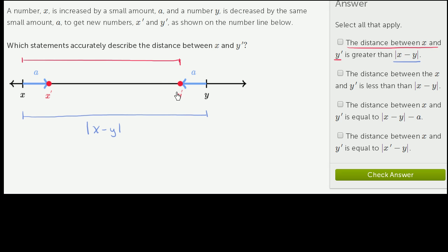So is this true — that the red distance, the distance between x and y prime, is greater than the distance between x and y? No, clearly not. So this statement is not correct.